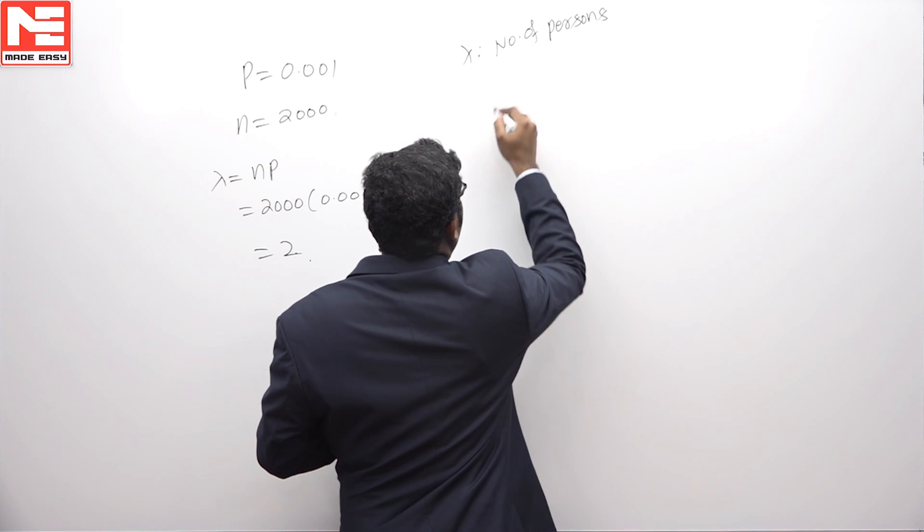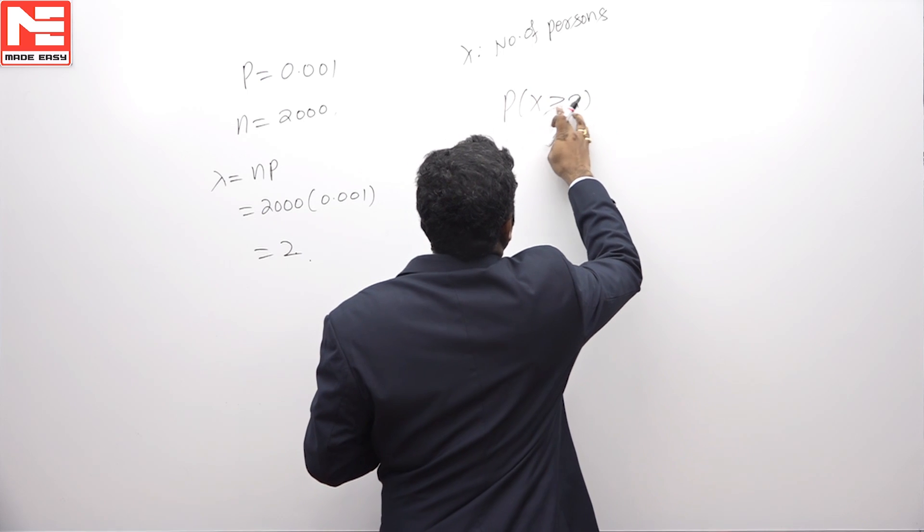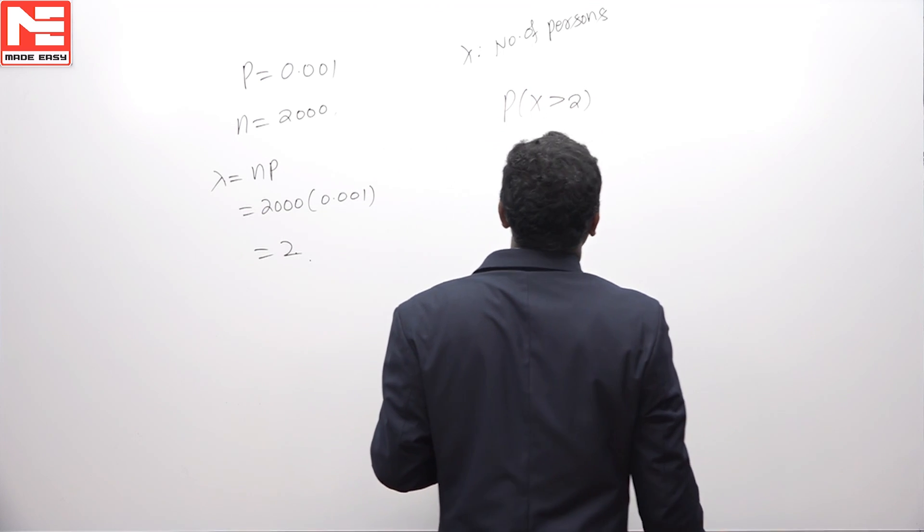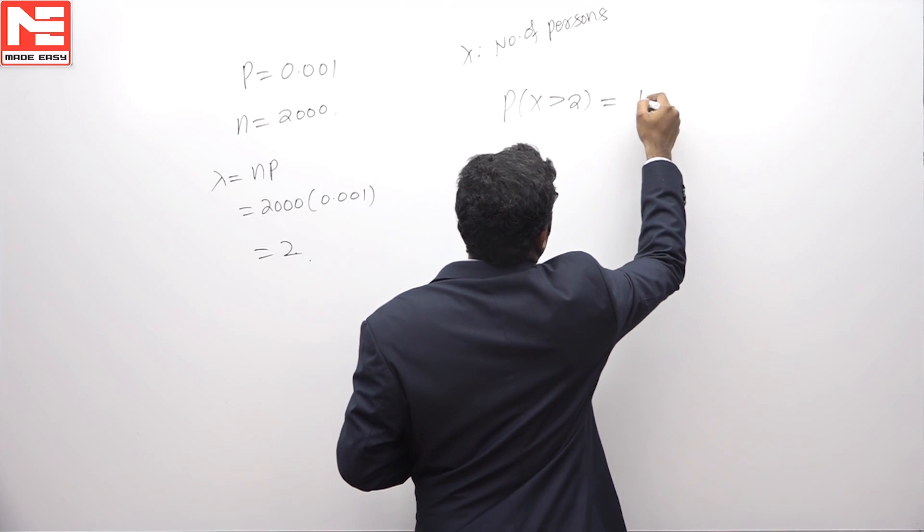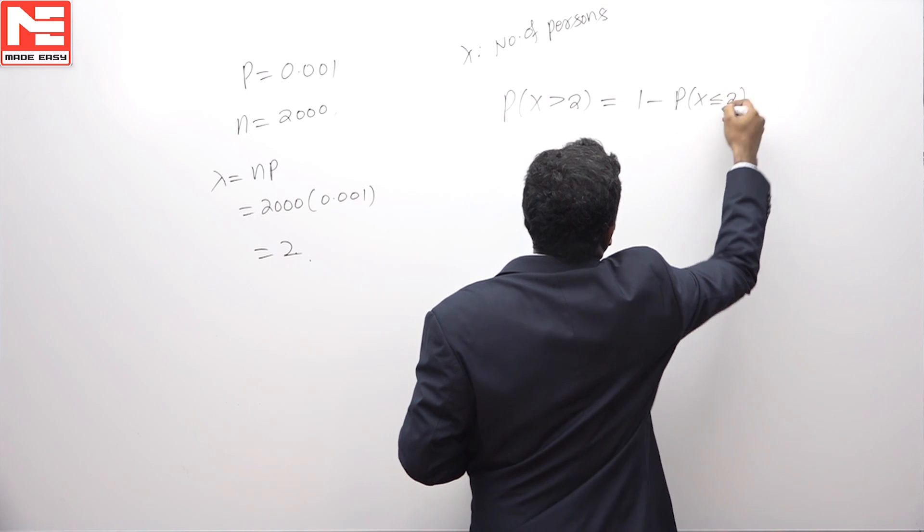Now we have to calculate the probability of X greater than 2. Probability of X greater than 2 is nothing but 1 minus the probability of X less than or equal to 2.